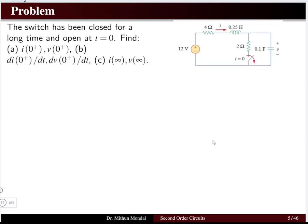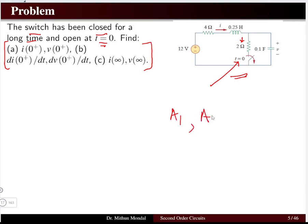Let us take one problem to understand initial and final conditions. The switch has been closed for a long time and opens at t = 0. We need to find all initial conditions — because we need the boundary constants a1 and a2 in the differential equation. We will redraw the circuit for time t = 0⁻, t = 0⁺, and t = ∞.